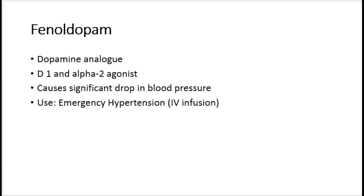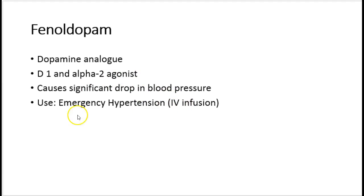Fenoldopam is another dopamine analog that selectively acts on D1 and alpha 2 receptors. Because of this D1 and alpha 2 action, it decreases sympathetic outflow and causes vasodilation of blood vessels supplying important organs like the kidney, leading to a significant drop in blood pressure. Therefore, fenoldopam is used as IV infusion for the treatment of emergency hypertension.